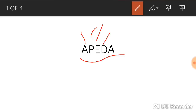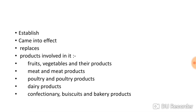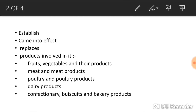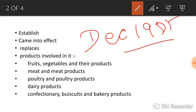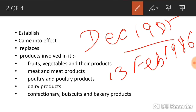APEDA covers food products exported outside India. It was established by Parliament in December 1985 and came into effect on 13th February 1986. It was originally called the Processed Food Export Promotion Council and was later renamed as the Agriculture and Processed Food Products Export Development Authority because it now also considers agricultural products like fruits and vegetables.